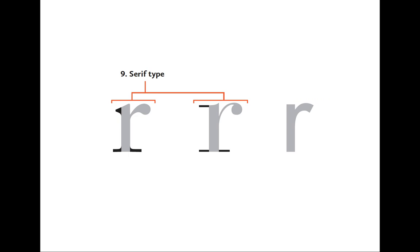Number nine — both of these letters are serif type. The lowercase r on the left and the lowercase r on the right are both serif typefaces. Number ten: the lowercase r on the right doesn't have any serifs — that's sans serif type. This comes from the French; 'sans' means 'without,' so it literally means 'without serifs.' Serif type on the left, sans serif on the right — a concept you're probably already familiar with.